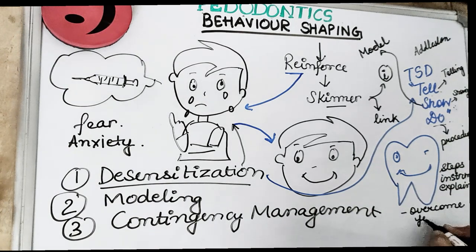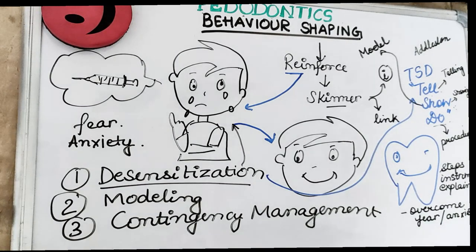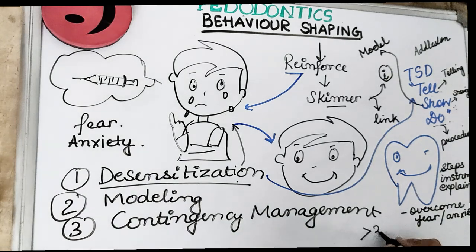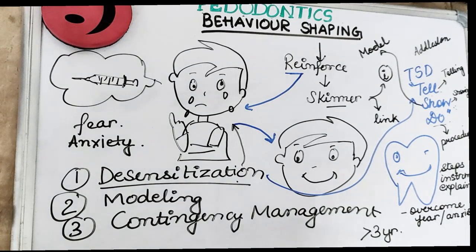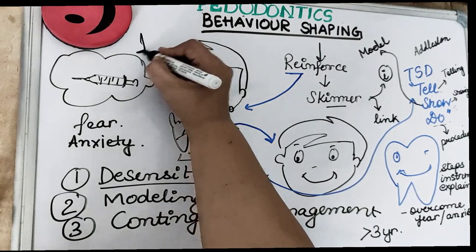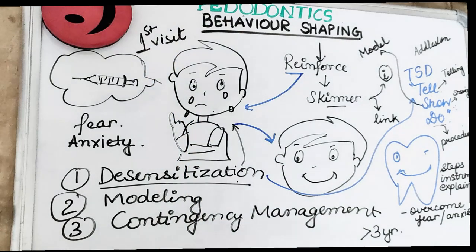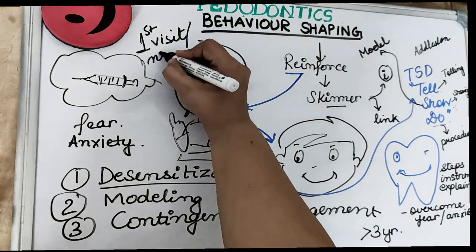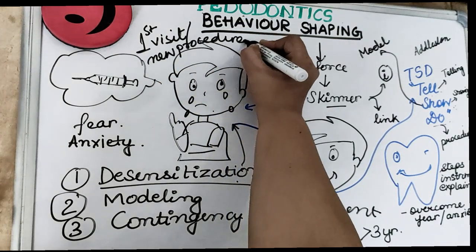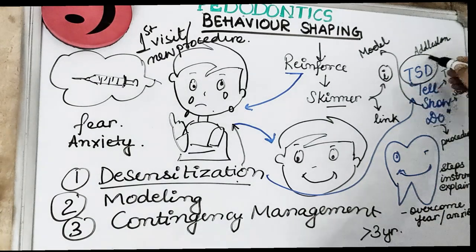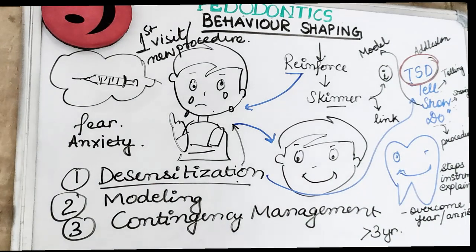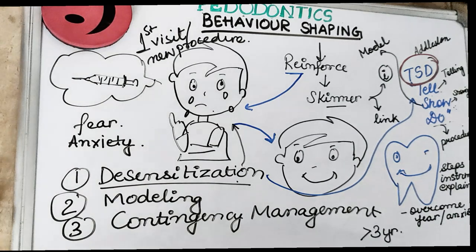By telling, showing, and doing, a child can overcome small dental fear or anxiety related to dental treatment. This technique is used in children more than three years of age, in fearful children, during the first visit, or any subsequent visit when introducing a new dental procedure. It can also be used in apprehensive children who have received information from parents, and it is a popularly used technique for desensitizing a child.